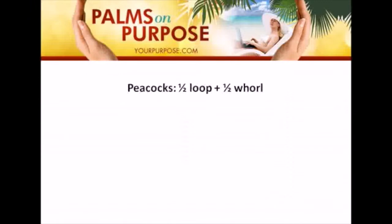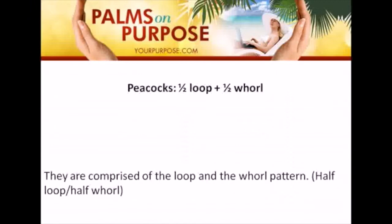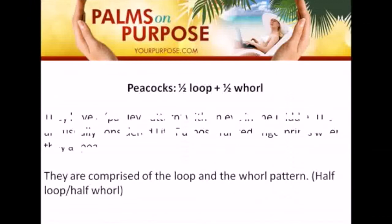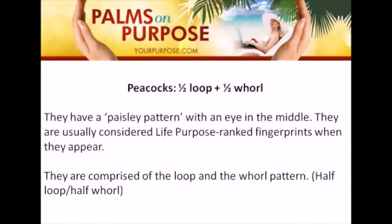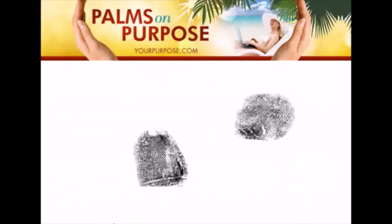Peacocks are half a loop and half a wall. A loop is a type of fingerprint, and half a wall is what you just saw. They're comprised of a loop and wall pattern — half loop, half wall. They have a paisley pattern with an eye in the middle, and they're usually considered a life purpose-ranked fingerprint when they appear. You can see the little eye, and then it flows out to one side, so it doesn't have a complete circular effect like the wall.